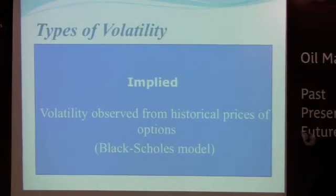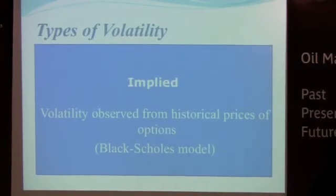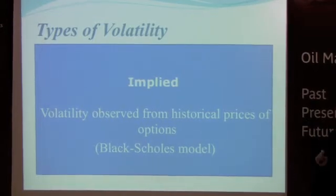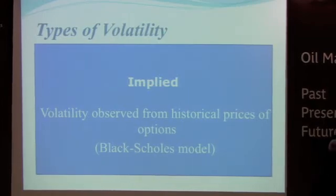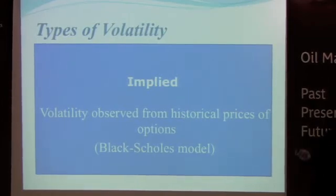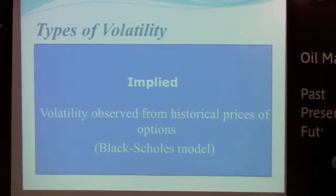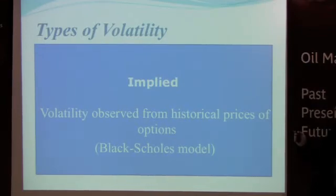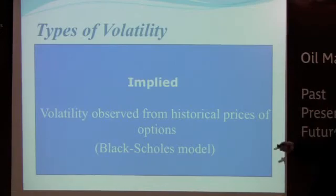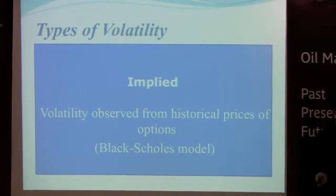Implied volatility is probably something you are already familiar with. It's the volatility calculated specifically using option prices — nothing else. In real life, that's what they do in investment banks: they calculate implied volatility using mainly the Black-Scholes model, which is not extremely accurate in my opinion. We will talk about this in a further presentation. Implied volatility is essentially the volatility index — the VIX — implied volatility calculated on S&P 500 option prices.